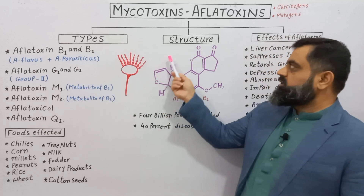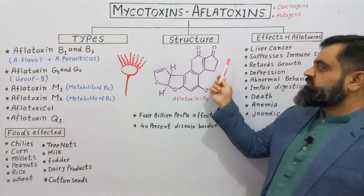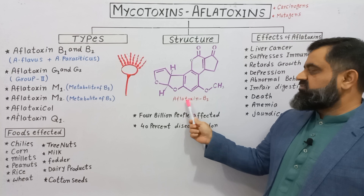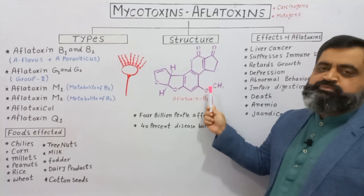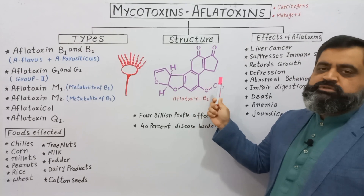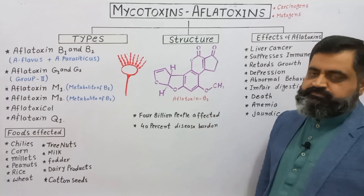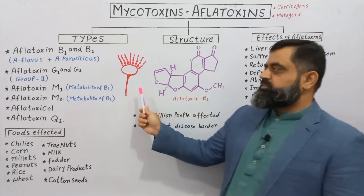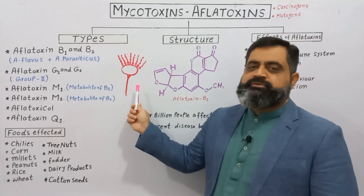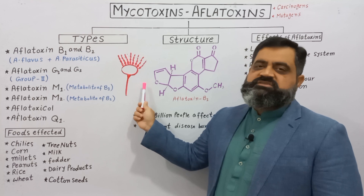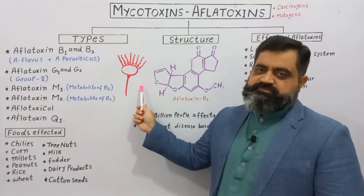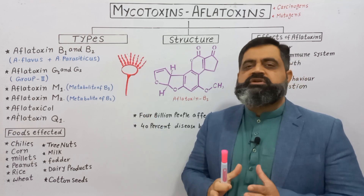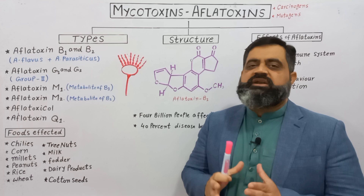First, we are going to discuss different types of aflatoxins present in our food. I have made a diagram or structure of the compound aflatoxin B1, which is the most poisonous and most carcinogenic aflatoxin. This aflatoxin is produced by spores of Aspergillus flavus, a fungi which grows on certain nuts and foods.